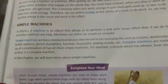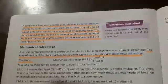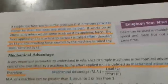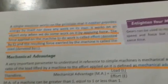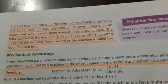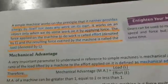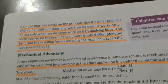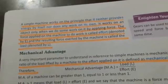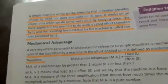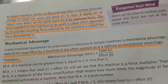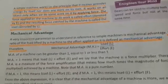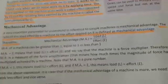A simple machine works on the principle that it neither provides energy by itself nor does any work on its own. It works on an object only when we do some work on it by applying force. The force applied on the machine to do work is called effort, denoted by capital E, and the resulting force exerted by the machine is called load, denoted by capital L.